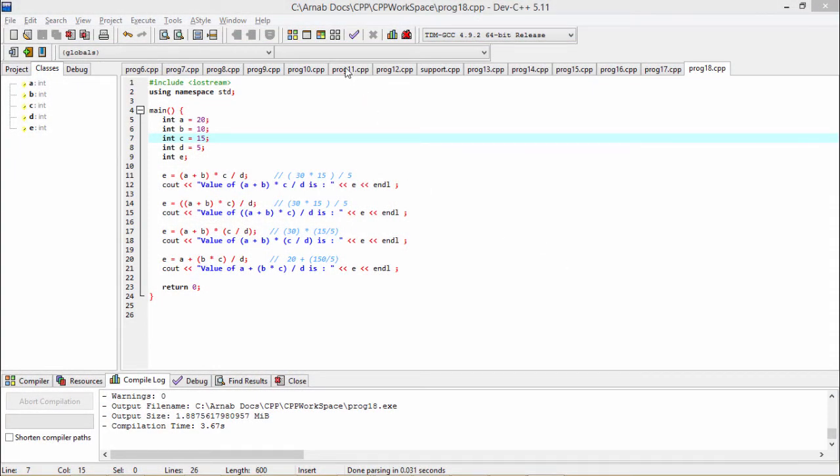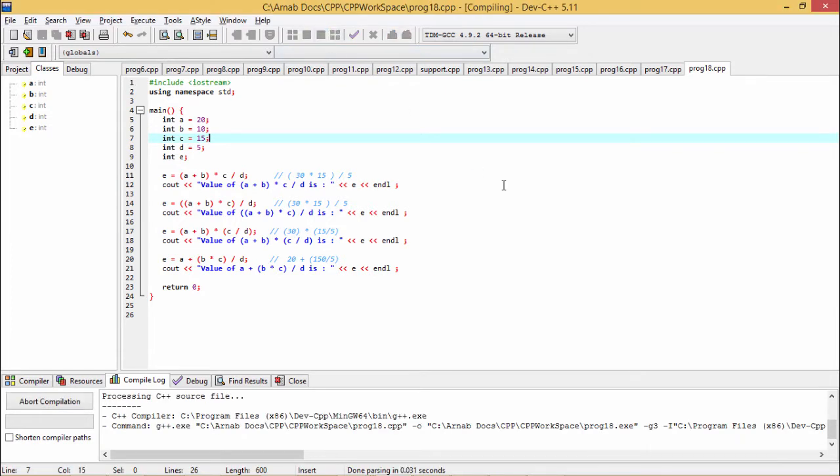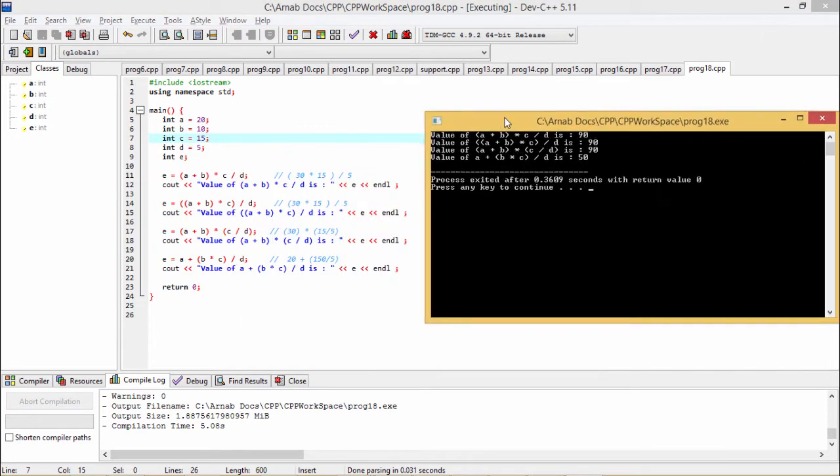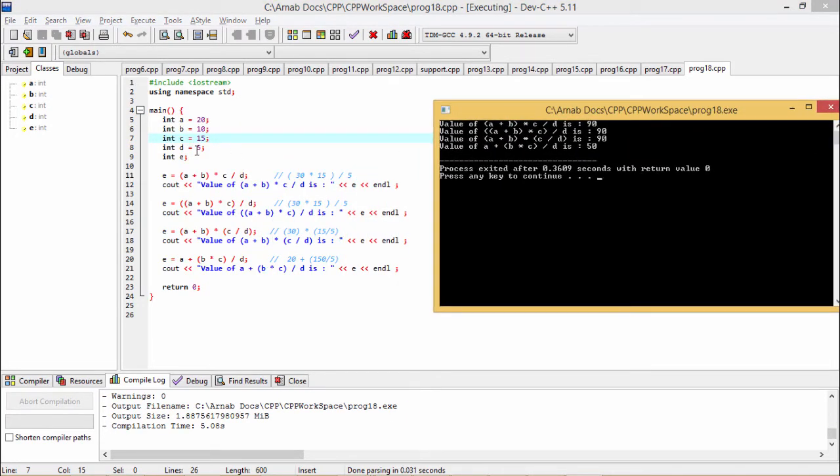Let us explain the output of this program. Here we shall explain line by line what is happening. Here A, B, C, D, E these are the variables we defined. A, B, C, D have their initial values as 20, 10, 15, and 5 respectively. E is defined but uninitialized.